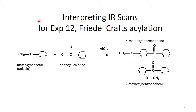Interpreting IR scans for experiment 12, Friedel-Crafts acylation. We're reacting methoxybenzene with benzoyl chloride in the presence of aluminum chloride, producing a mixture of 2-methoxybenzophenone and 4-methoxybenzophenone. The methoxy group is an ether group which is electron donating and ring activating towards electrophilic aromatic substitution. It's also ortho-para directing, which is why we get a mixture of the ortho and para products.